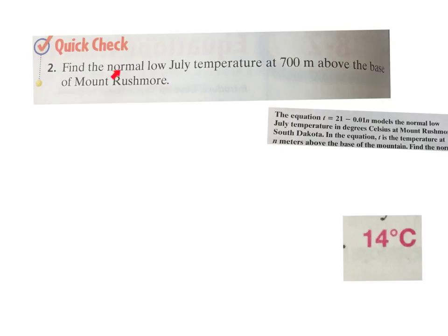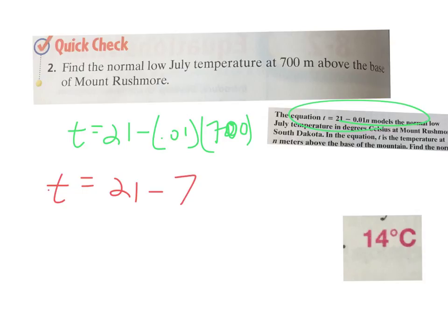So in this case, find the normal low July temperature at 700 meters above the base of Mount Rushmore. So same thing. We're going to plug a 700 instead of 300. So T equals 21 minus 0.01 times, in this case, 700. Again, the formula is right here that we're looking for. So then, we have 21 minus, and again, 700 times 0.01 is 7. 21 minus 7 is 14. So the answer is 14. In this case, it's going to be degrees Celsius.